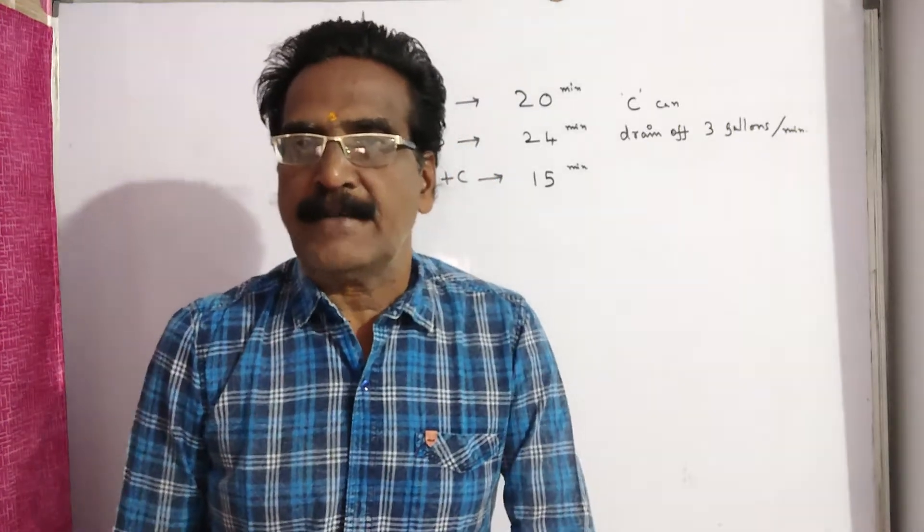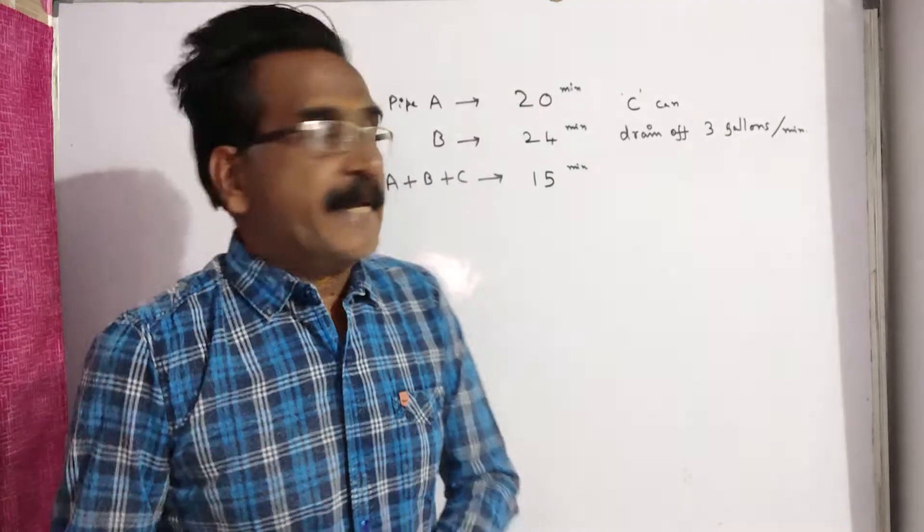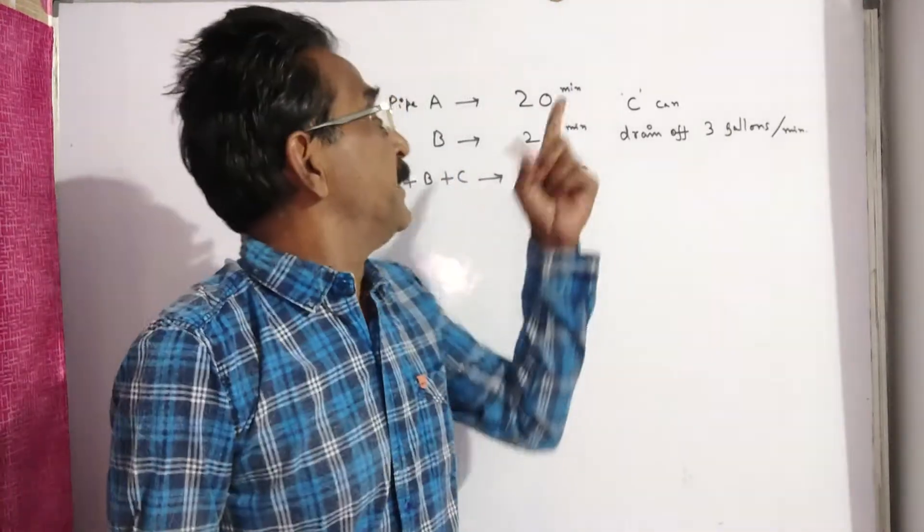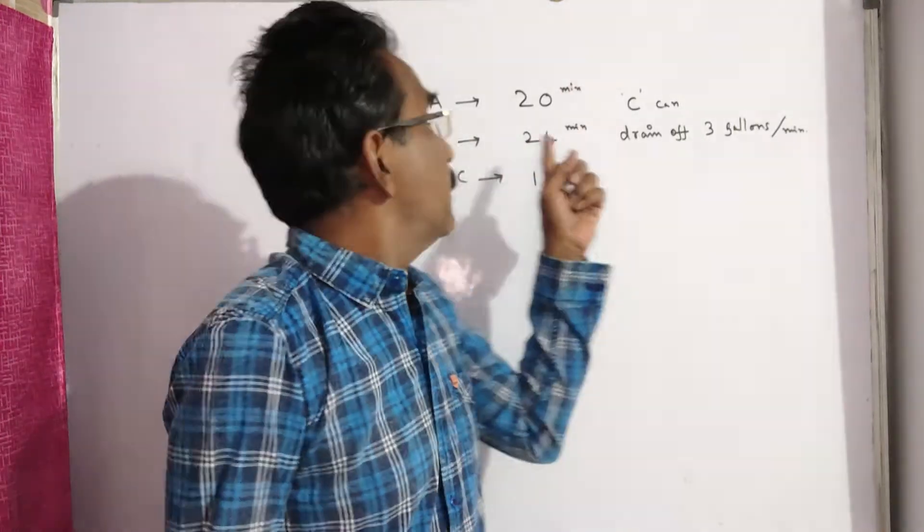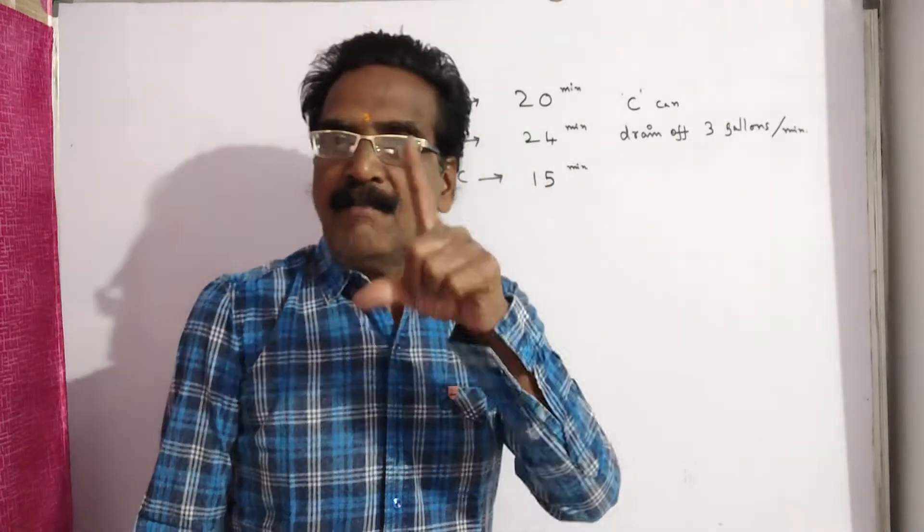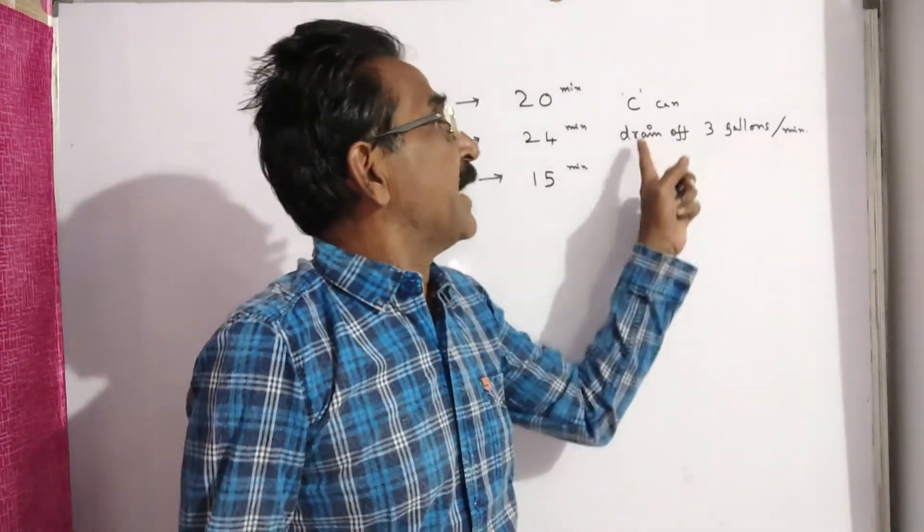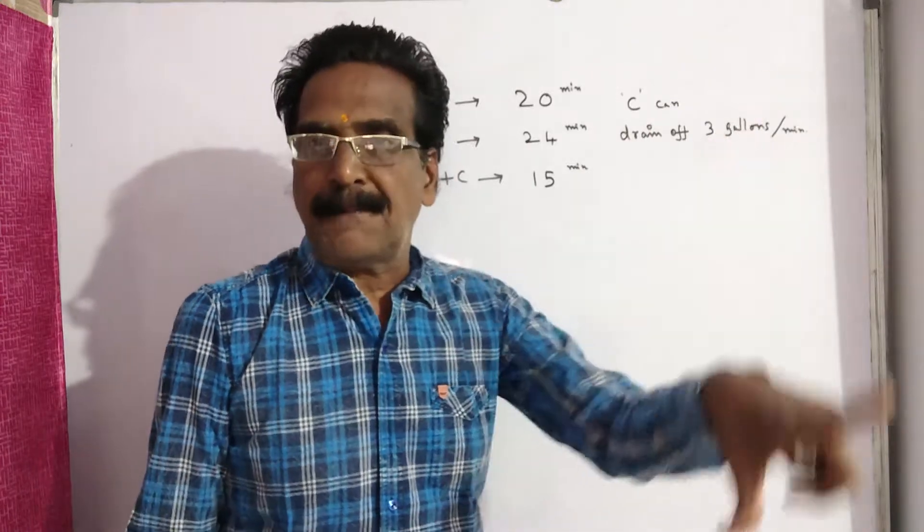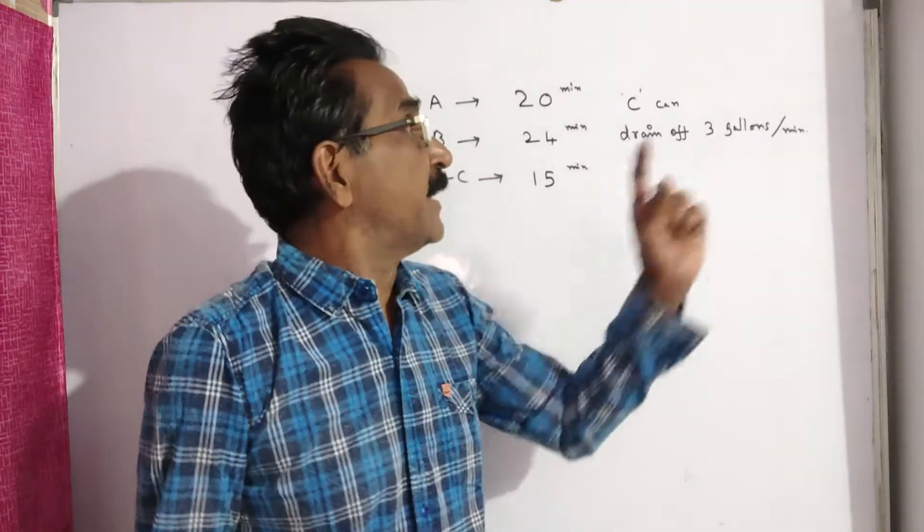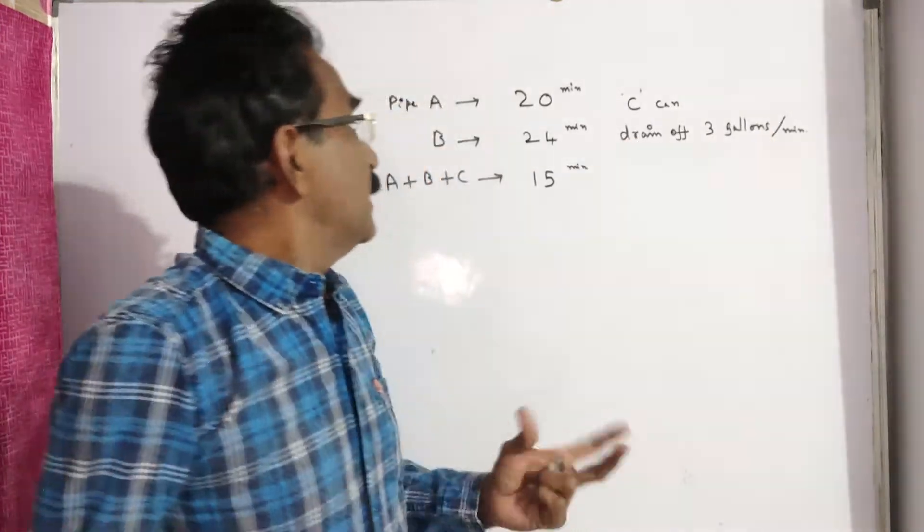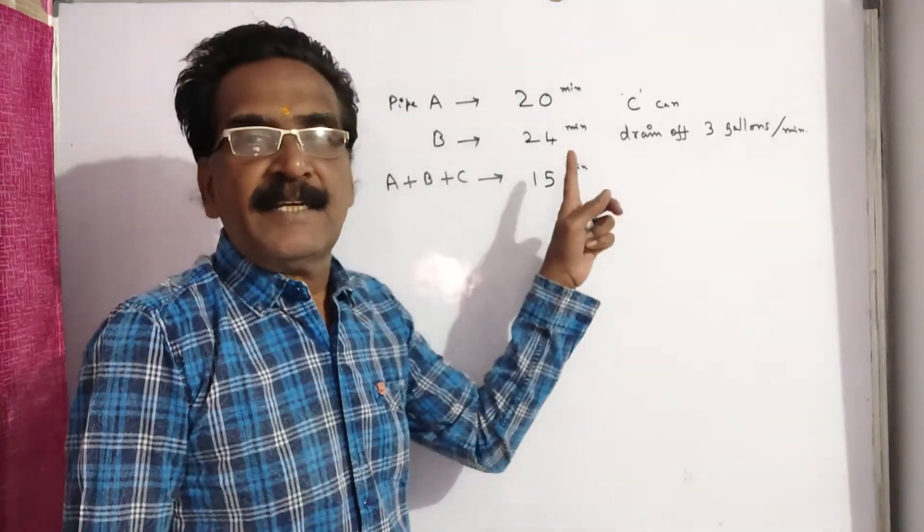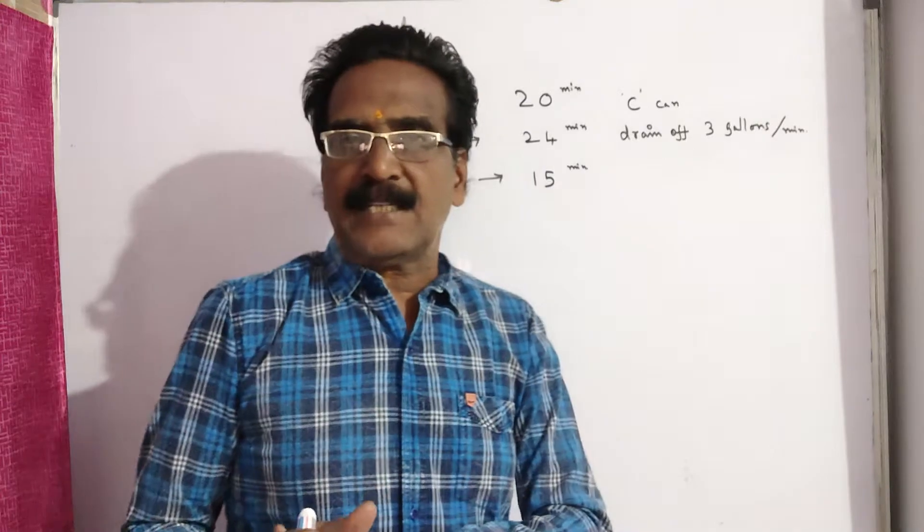Hi friends, good morning. Please look at the next problem. Two pipes A and B can fill a cistern in 20 minutes and 24 minutes, whereas pipe C can drain off 3 gallons per minute. It is an emptying pipe. If all three pipes are opened, the tank is filled in 15 minutes. So what is the capacity of the tank?